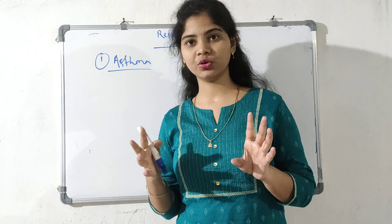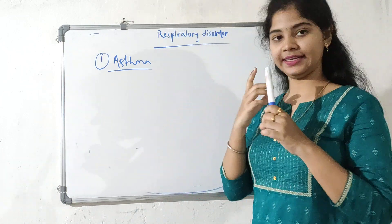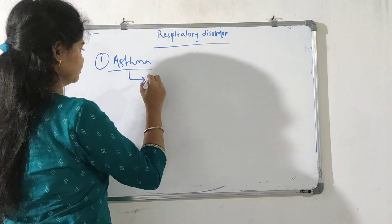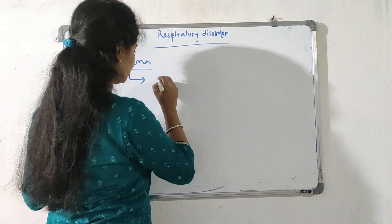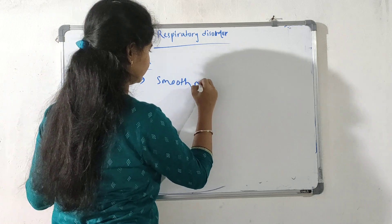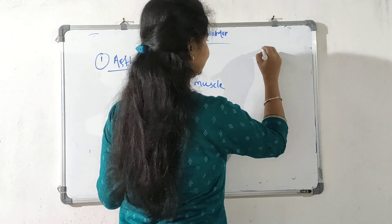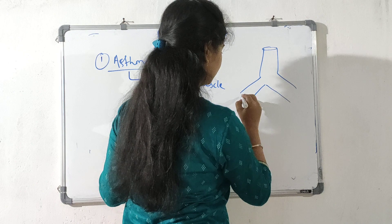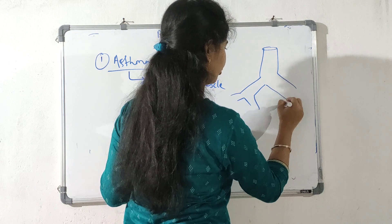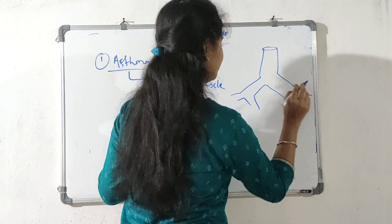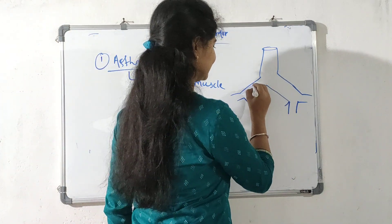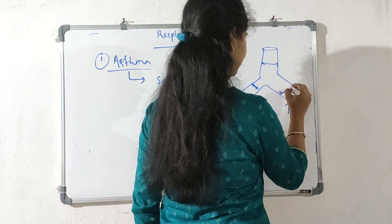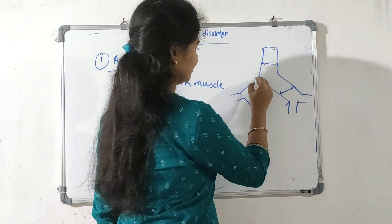This is our trachea. This is our bronchi. Why the bronchi? This is our thickness — the thickness of the airway walls.